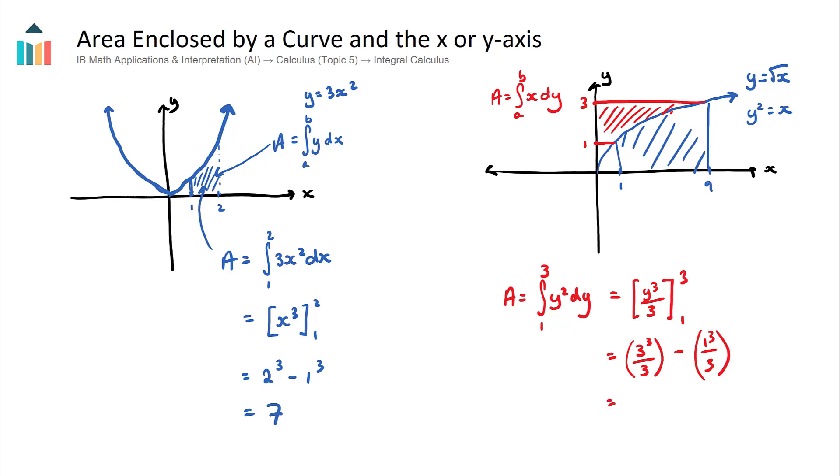This will become 3 cubed over 3, minus 1 cubed over 3. Now, 3 cubed over 3 is 27 over 3. We will subtract 1 over 3, and therefore, we will get 26 over 3. And this will be the area up here.